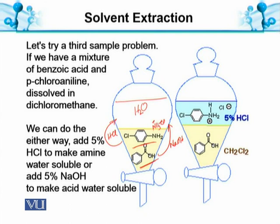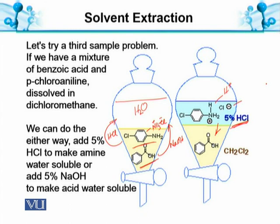With 5% HCl treatment, the salt of Paracloroaniline is formed and moves into the aqueous layer. Benzoic Acid, meanwhile, remains in the organic layer because HCl does not convert it — it stays as the free acid in the organic phase. By changing the chemistry using acids and bases, we can selectively move compounds between the organic and aqueous layers, separating weak acids and non-polar compounds from stronger acids and amines.